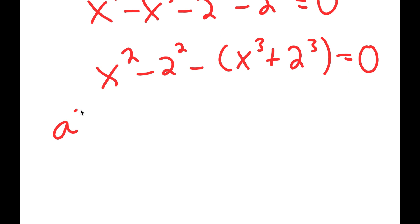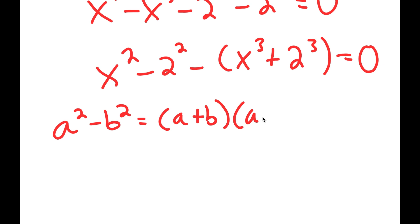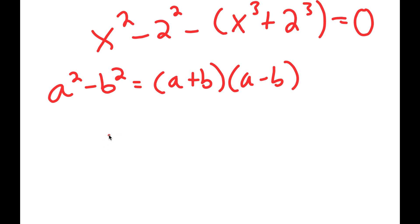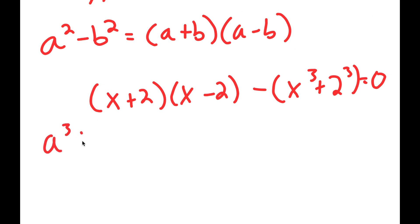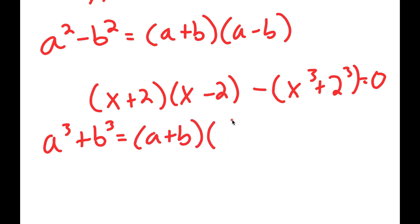If I have something in the form a squared minus b squared, this equals a plus b times a minus b. So x squared minus 2 squared equals x plus 2 times x minus 2. And if I have a to the power of 3 plus b to the power of 3, this equals a plus b times a squared minus ab plus b squared. These two properties are really important algebra, so I would recommend memorizing them.